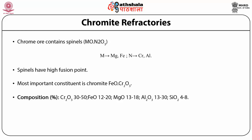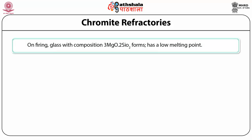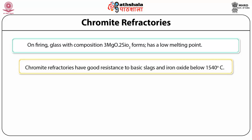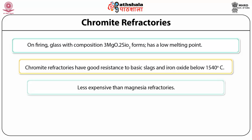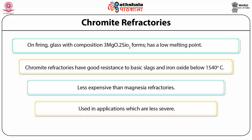On firing, the glass 3MgO·2SiO2 forms, which provides bonding between the grains. This glass is silica rich and has a low melting point, so chromite bricks have a low refractoriness. They have good resistance to basic slags and to iron oxides below about 1540°C. They are less expensive than magnesite refractories and are used in metallurgical furnaces where conditions are less severe.